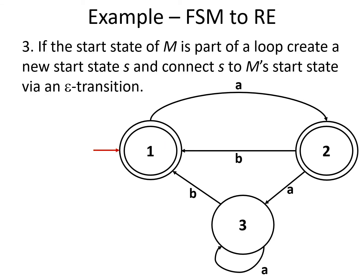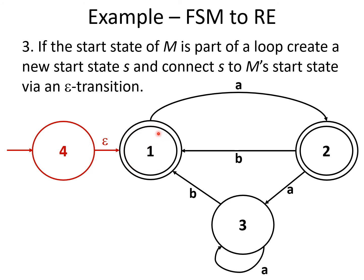In step 3, if the start state of M is part of a loop, create a new start state S and connect S to M's start state via an epsilon transition. In this FSM, start state 1 is part of the loop 1 → A → B → back to state 1, so 1 is part of a loop. Therefore, we create a new start state in M' and add an epsilon transition from the new start state to the old start state. State 1 is no longer the start state.